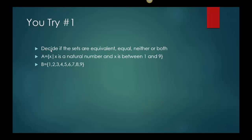So let me give you a couple to try. I have three of them. I want you to look at each one, and this should be really quick. Decide if these sets are equal, equivalent, neither, or both. The first one says A={x | x is a natural number and x is between 1 and 9}, and then B={1,2,3,4,5,6,7,8,9}. So do you think that's equivalent, equal, neither, or both?